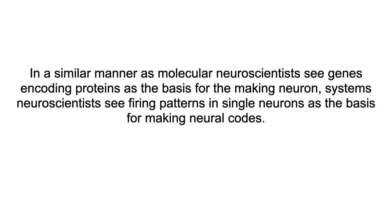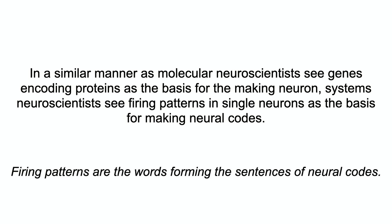In a similar manner as molecular neuroscientists see genes encoding proteins as the basis for making neurons, systems neuroscientists see firing patterns in single neurons as the basis for making neural codes. Firing patterns are the words forming the sentences of neural codes.